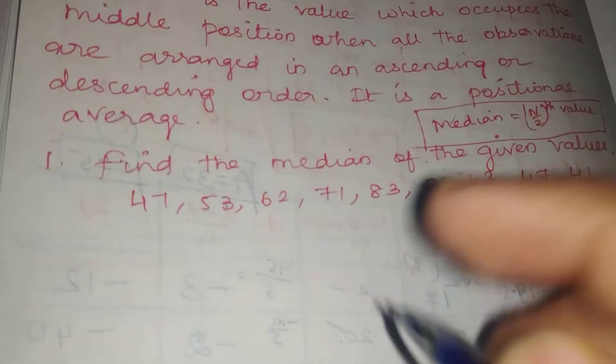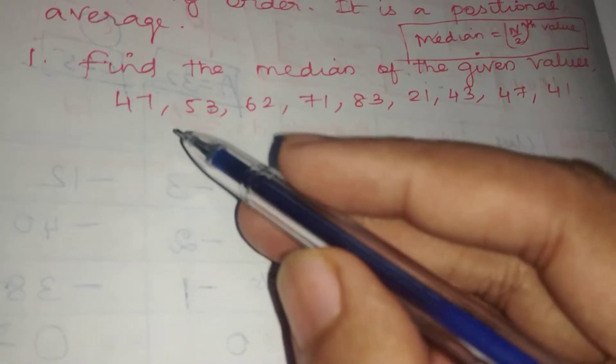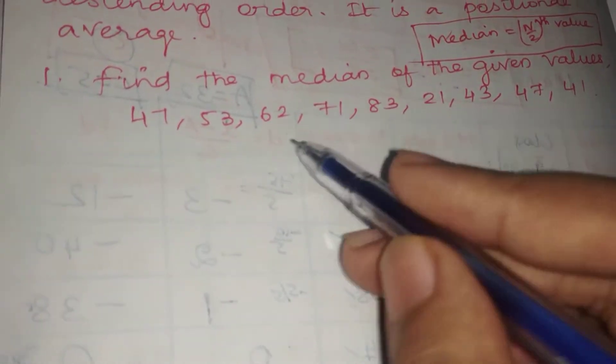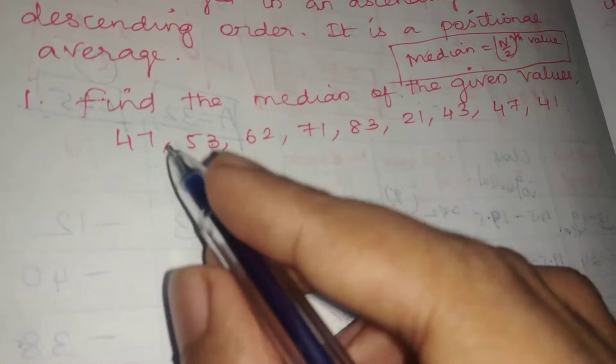Now for the first problem in Exercise 8.2: Find the median of the given values. The values are 47, 53, 62, 71, 82, 21, 43, 47, 41. We need to arrange these in ascending order.